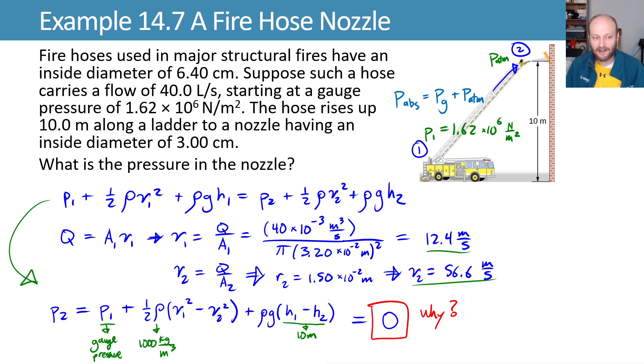So this says that if I'm plugging in P₁ as gauge pressure, my P₂ is going to be in gauge pressure, which means zero gauge pressure equals atmospheric. Yes, yes, makes sense.